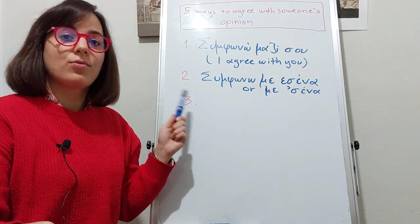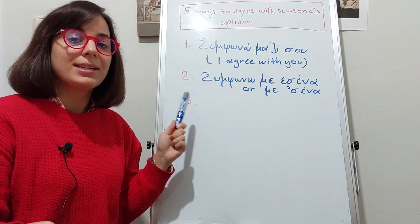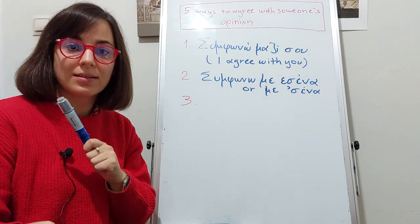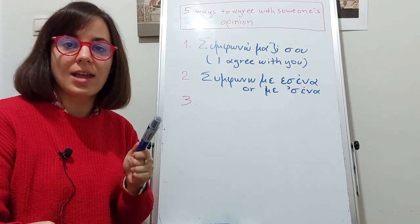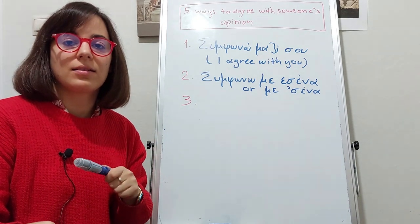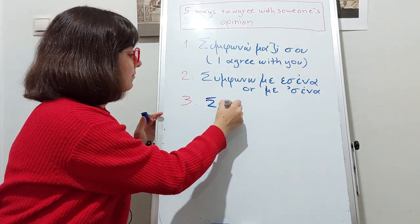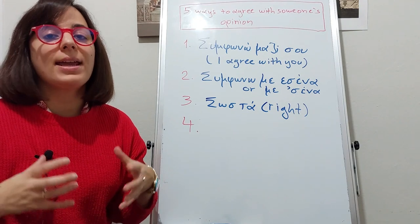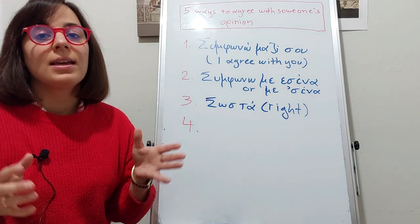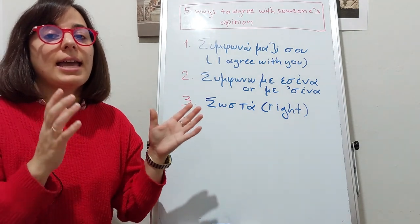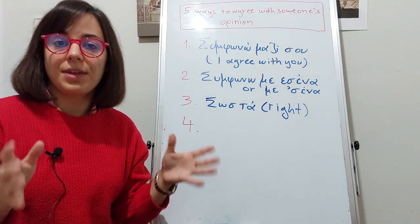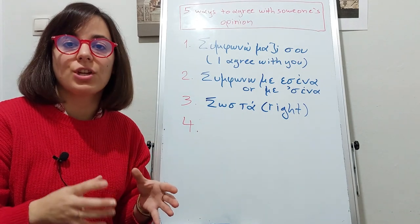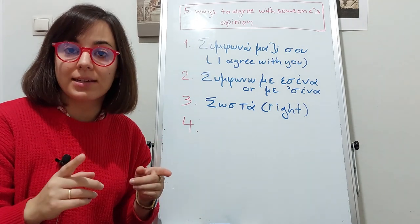The third way is an easier one — in one word we say Σωστά, meaning "Right." And the fourth way is Έχεις δίκιο — Έχεις δίκιο — meaning "You are right."